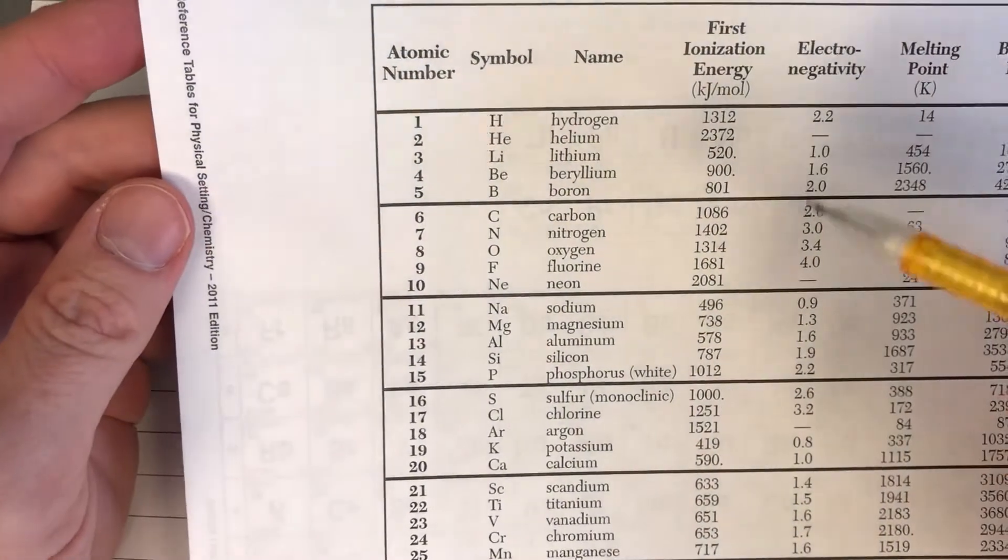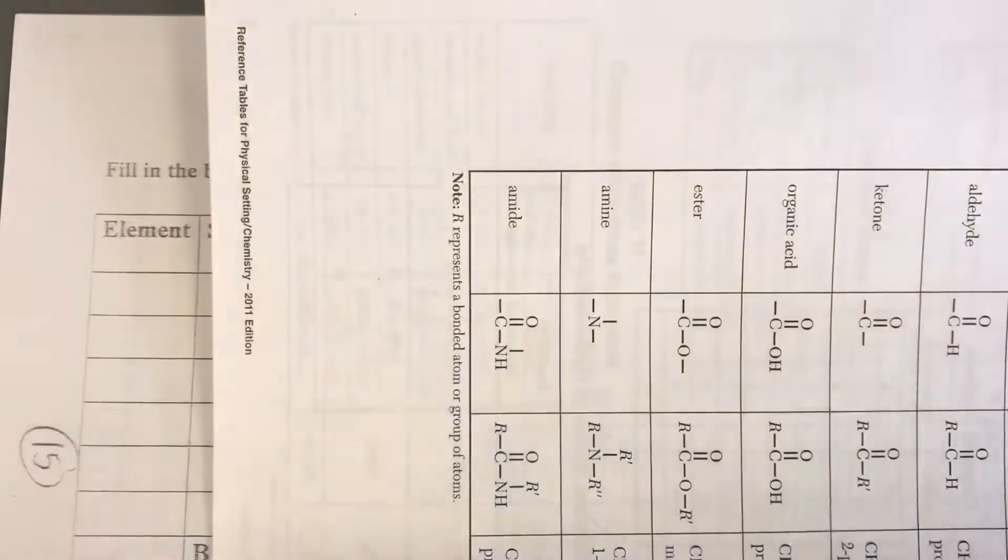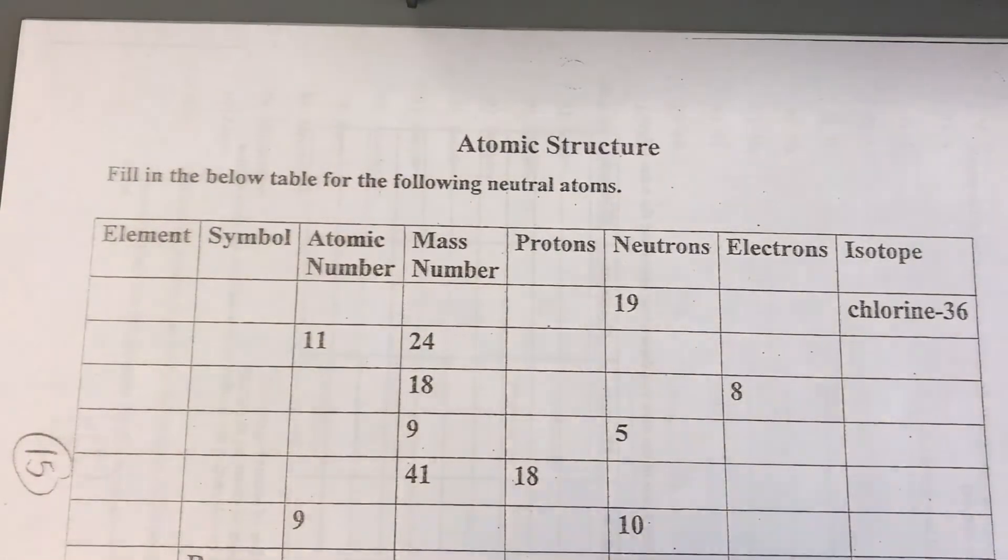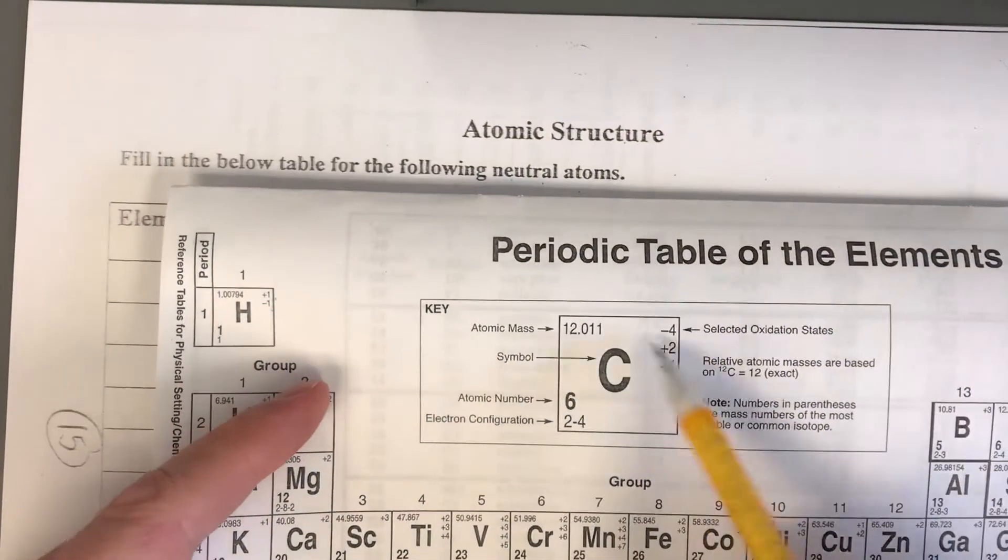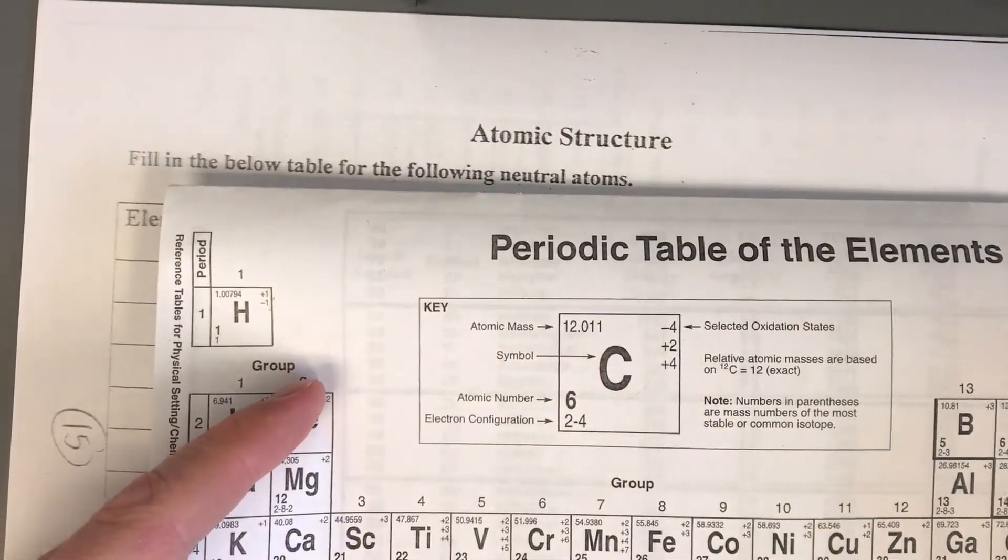Remember table S lists the atomic number, the symbol, and the names you might need, but most of the other details are going to come off of something like this. We're using the key, we're using the elements, and we're going to be able to determine that.